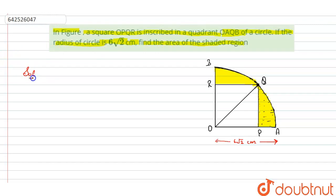Now what we have to find: we have to find the area of shaded region. Area of shaded region can be found by subtracting area of square from area of quadrant. So area of quadrant minus area of square.